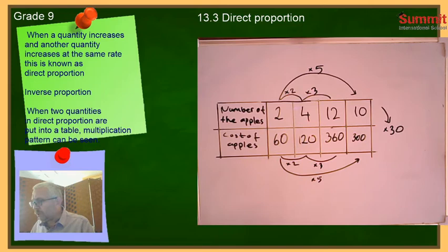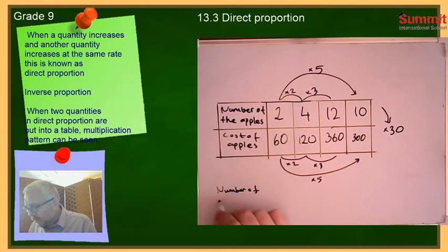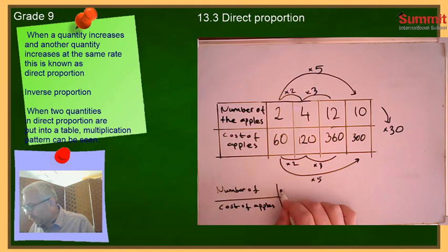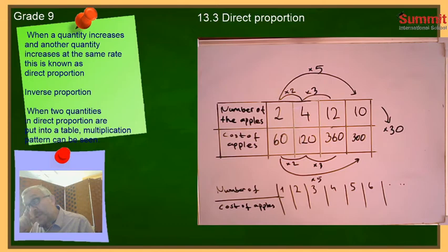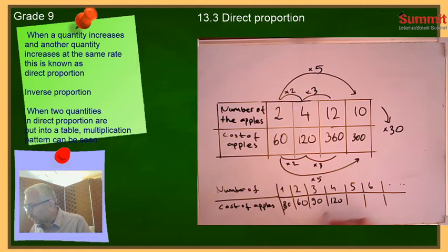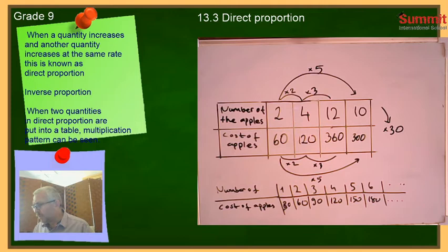We can also write this as a sequential table. Number of apples goes 1, 2, 3, 4, 5, 6 and so on. The cost increases at the same rate: 1×30=30, 2×30=60, 3×30=90, 4×30=120, 5×30=150, 6×30=180. This is the direct proportion — it looks like a multiplication table.